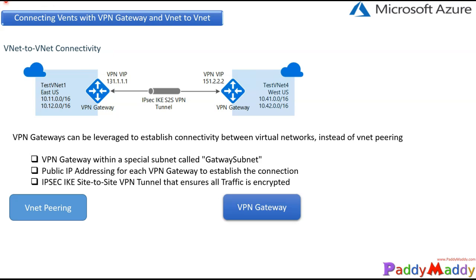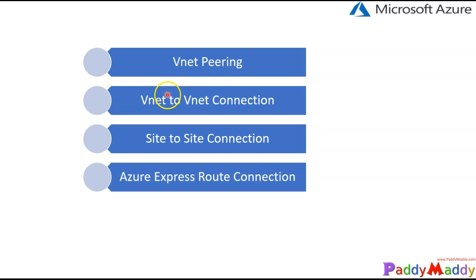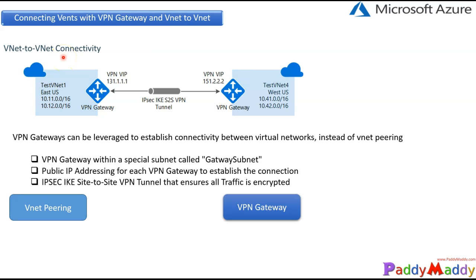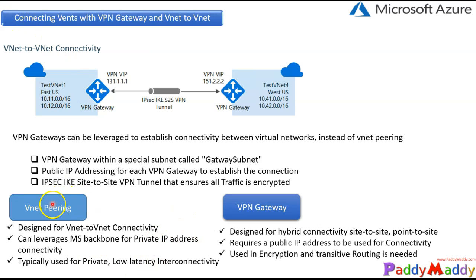Going back to summarize the comparison between VNet peering and VNet-to-VNet connectivity: both support similar features like cross-subscription and cross-region connectivity. However, VNet peering uses the Microsoft backbone for private IP — it doesn't require any public IP connectivity and communicates entirely within the Microsoft Azure network. With VNet-to-VNet connectivity, when you introduce a VPN gateway, a public IP is needed. You can have primary and secondary public IPs for high availability, and all communication is encrypted.